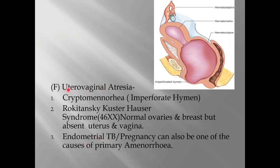In Turner syndrome, the girl has streak gonads, absent breast development, an infantile uterus, and presents with primary amenorrhea. Another cause is utero-vaginal atresia, where either the uterus or vagina can be absent or malformed. One example is cryptomenorrhea, which is a condition where the hymen opening is absent — that is, imperforate hymen. Every girl has a small opening in the hymen, but in some girls this opening may not be present or is completely closed.